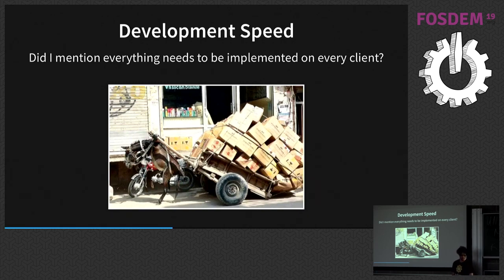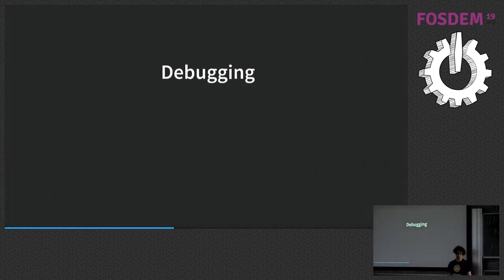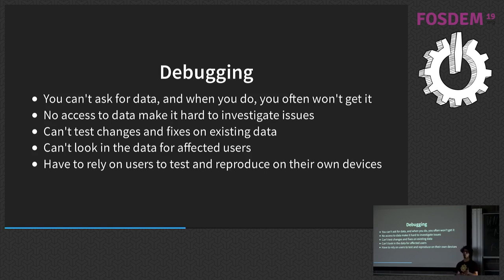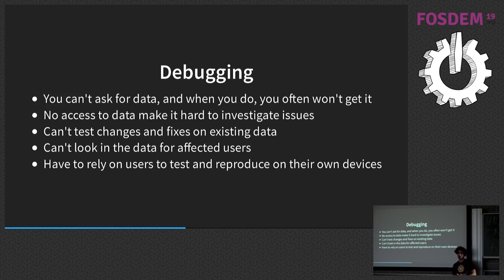Backend debugging is really a pain. You can't really ask for data, and when you do, you're not going to get it — the whole point of end-to-end encryption is not trusting anyone. You can't say 'I know I said don't trust anyone, but can you trust me and give me all your data?' Most people say no anyway. No access to data makes it very hard to investigate issues — you're essentially debugging blindly, trying to figure out what's going on.